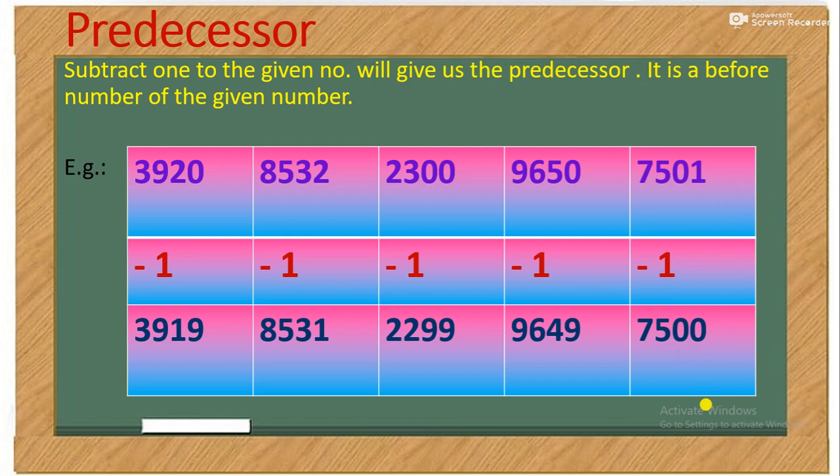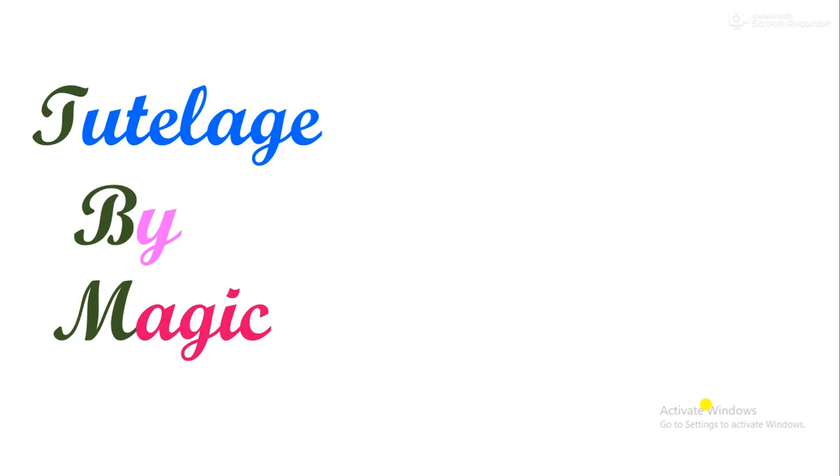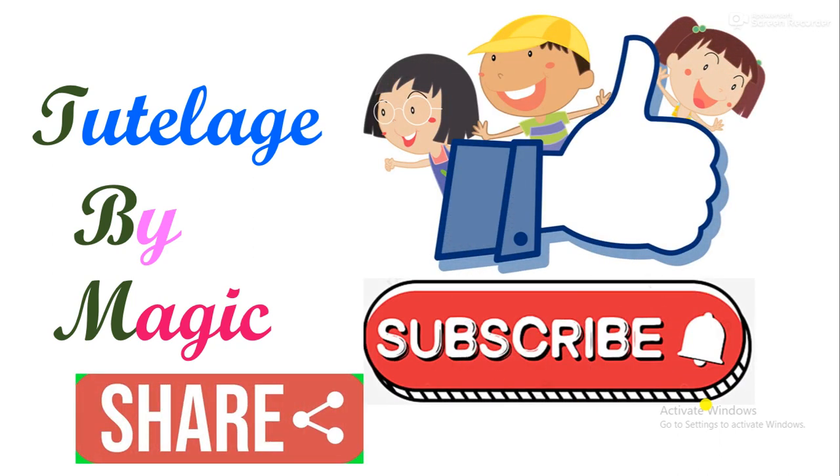minus 1 equals 7500. Give a visit to our description box, like, share, and subscribe to our channel Tutelage by Magic for such new knowledgeful videos.